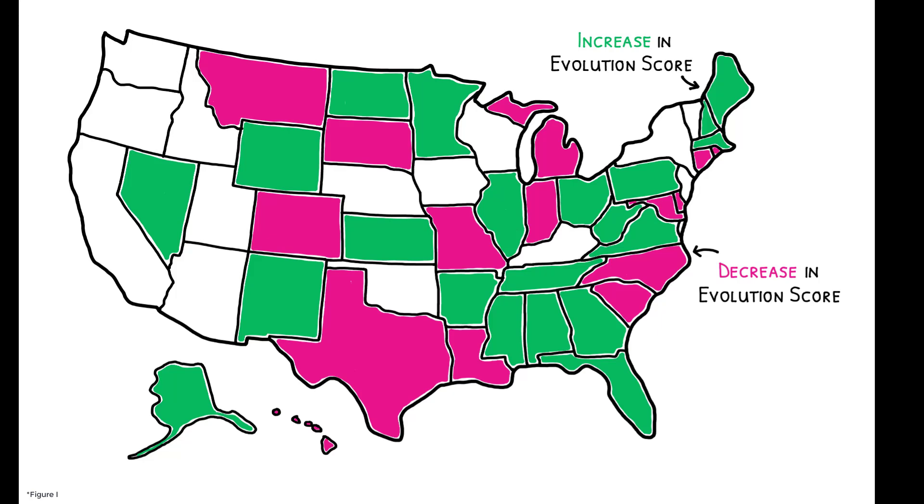The degree to which different standards cover evolution is measured by their evolution score, which ranges from 0 for no coverage to 1 for comprehensive coverage.